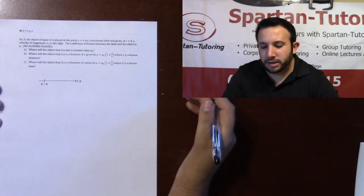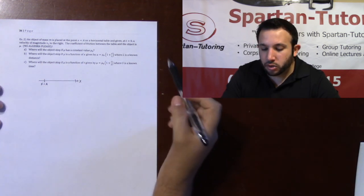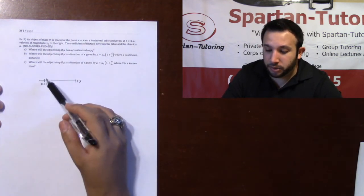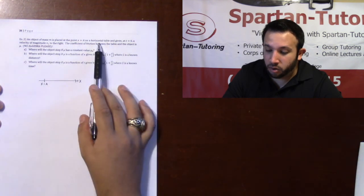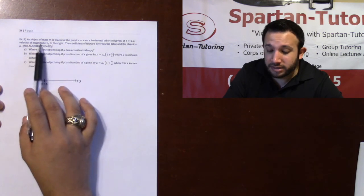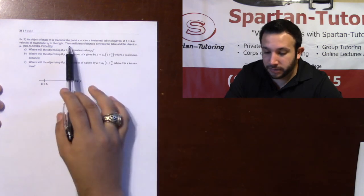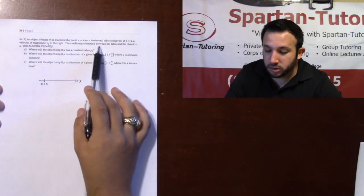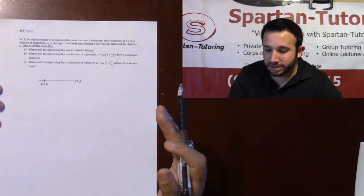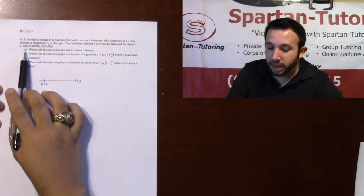Let's take a look at a slightly more complicated line problem. An object of mass m is placed at the point x equals a on a horizontal table, and given at t equals zero a velocity of magnitude v1 to the right. So your initial velocity is going to be v1. The coefficient of friction between the table and the object is mu, and no algebra — just how would you solve this, set up the equations to be able to solve it.